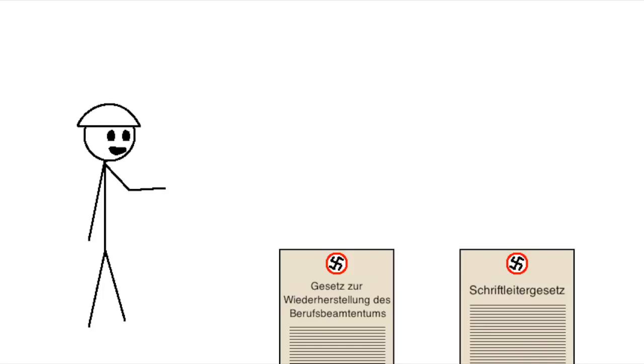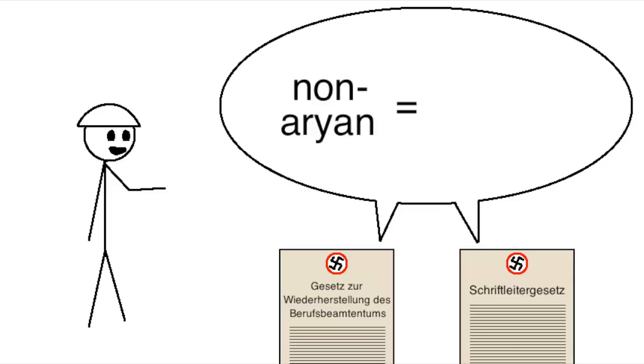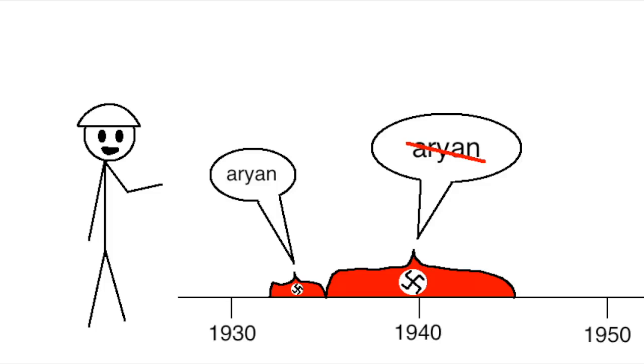Maybe the most ridiculous example of this is how they used it in a legal context. Two laws from 1933 literally defined non-Aryans as anyone with at least one Jewish grandparent. Funny thing though, the Nazis mostly stopped using the term Aryan in a legal context after 1935 because of those objections from academics.